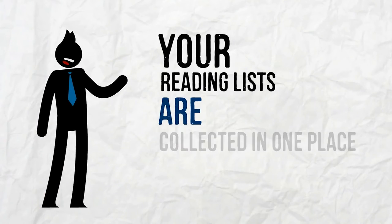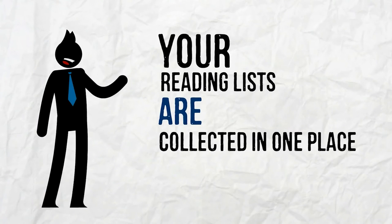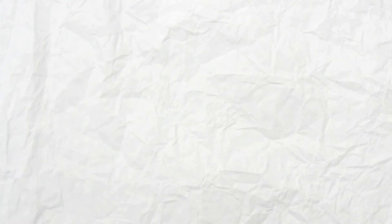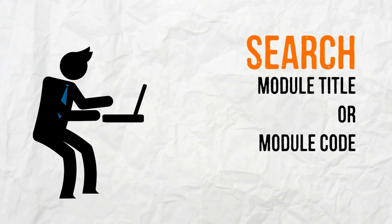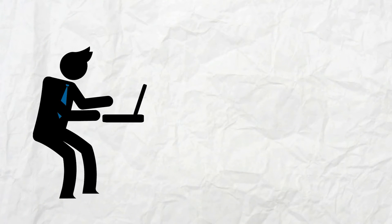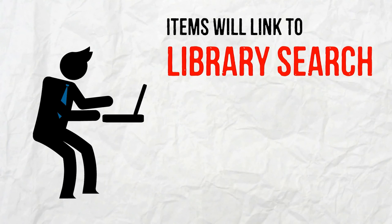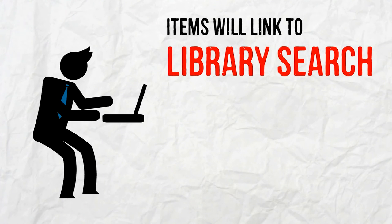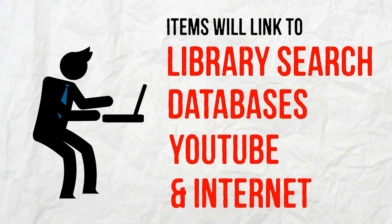Your reading lists are collected all in one place. Just search the module title or code on the reading list page. Items are linked either to library search if we have it, or they will give you all the information you need to find it elsewhere.